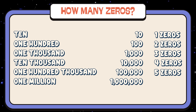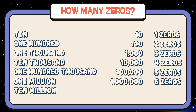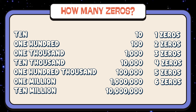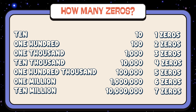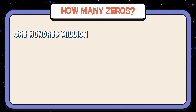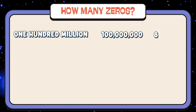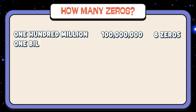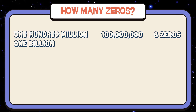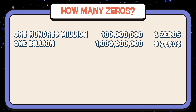One million — six zeros. Ten million — seven zeros. One hundred million — eight zeros. And lastly, one billion — nine zeros.